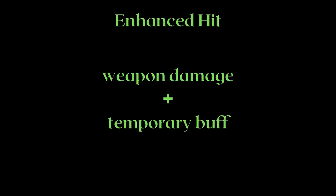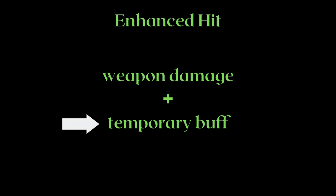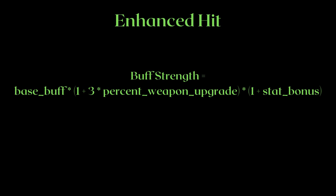Enhanced hit calculation is split up into the weapon damage portion and the temporary buff portion. The weapon damage portion is simple — it is what we previously covered in Chapter 1, weapon hit calculations. As for the temporary buff portion, this is where things start to get tricky. The temporary buff is equivalent to: base buff times (1 plus 3 times percent weapon upgrade) times (1 plus stat bonuses).